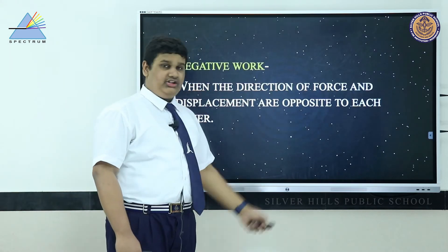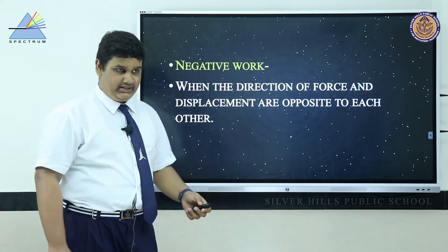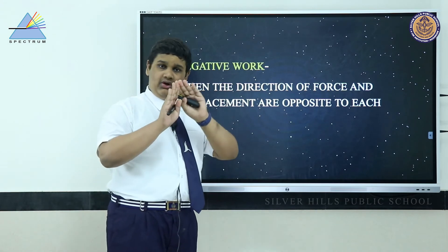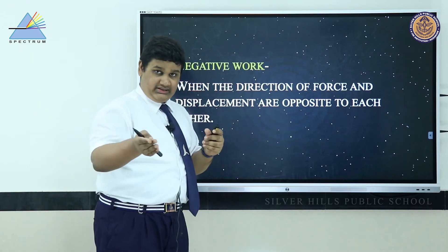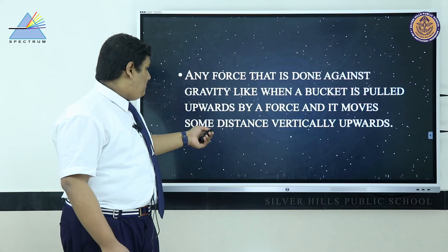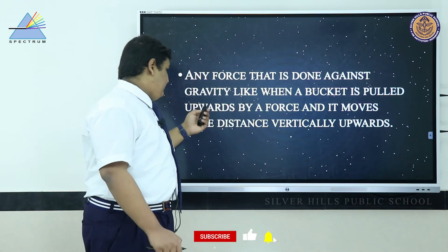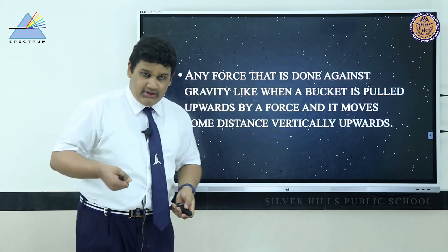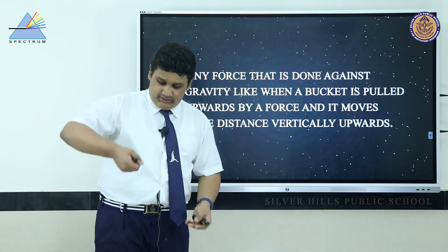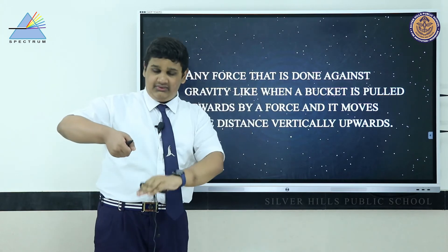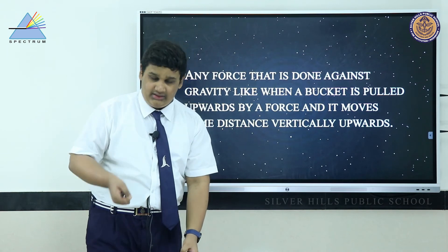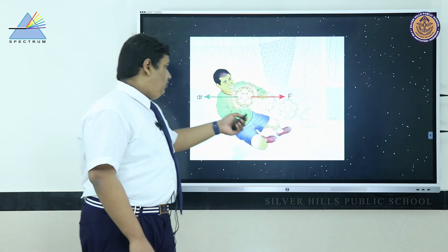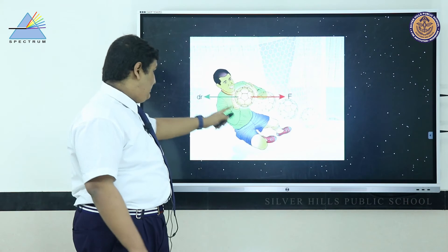Negative work occurs when the direction of force and displacement are opposite to each other. When a player kicks a ball into the goal post, the goalkeeper tries to save it — the ball exerts a force on the goalkeeper's hand, but the goalkeeper pushes it to the opposite side, so negative work is being done. Similarly, any force done against gravity, like pulling a bucket upwards, involves the gravitational force acting downward while displacement is upward — so negative work is done.